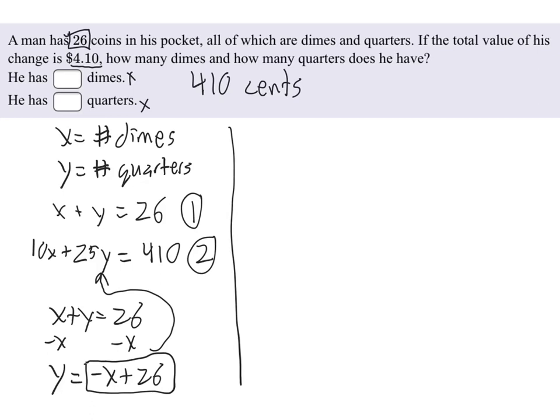So that turns equation 2 into this. We still have 10x like we had before. And now we're going to have plus 25 times the thing that we're substituting for y. So our equation is a little bit uglier than it was before, but we only have one variable, which means we can solve it and get a number. So let's do that.